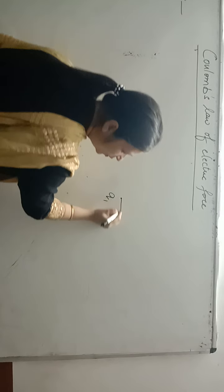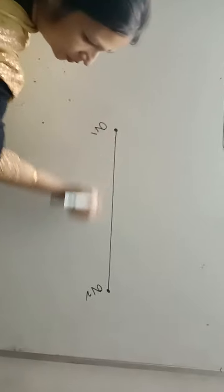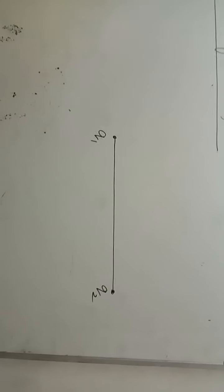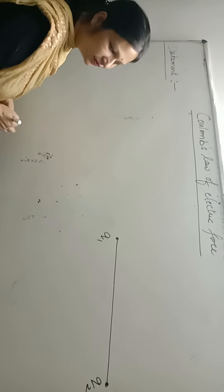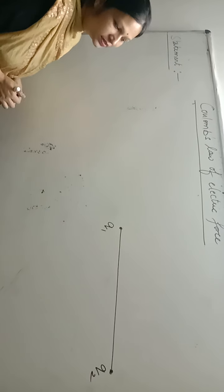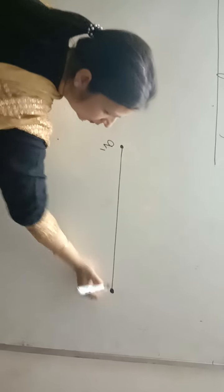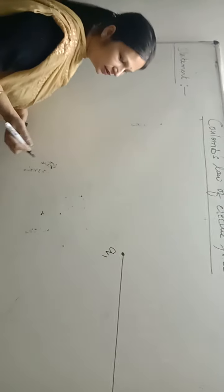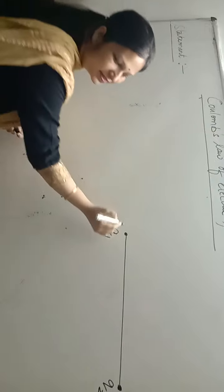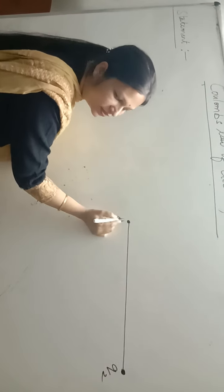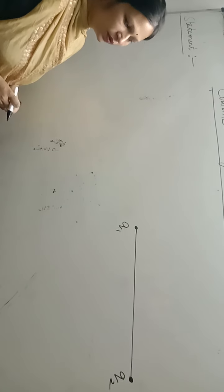We are considering two stationary point charges. 'Stationary' means charges at rest. 'Point charge' means that if the distance between two charges is much greater than their size, we treat them as point charges — similar to the concept of point mass we studied in Class 11. In that case, we call the charge a point charge.